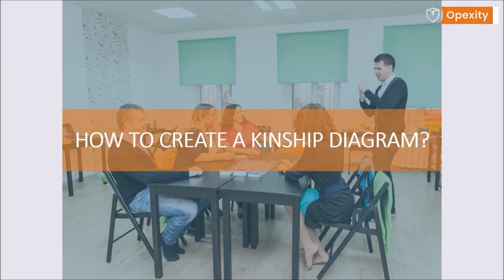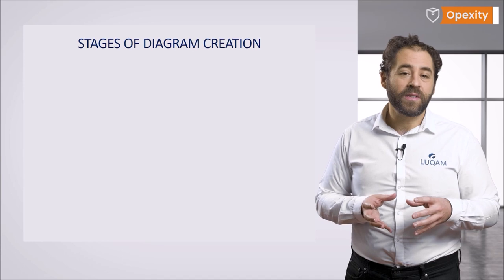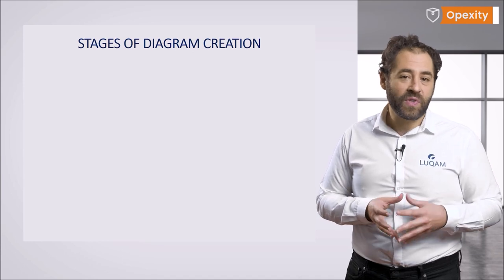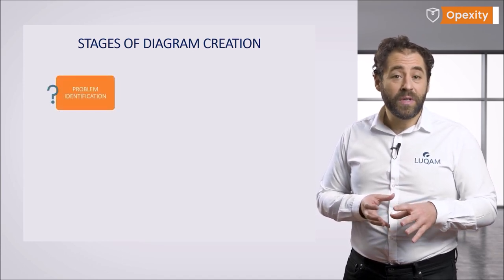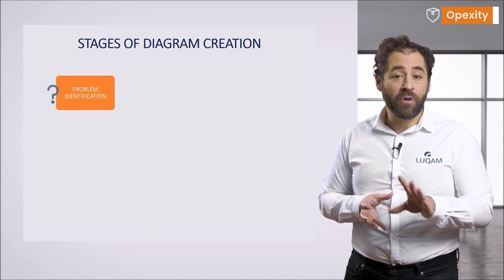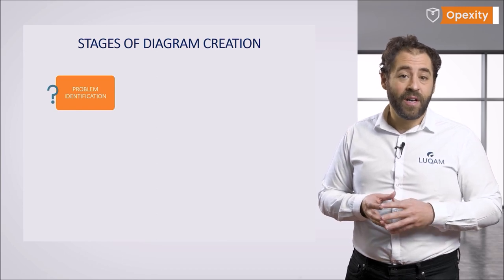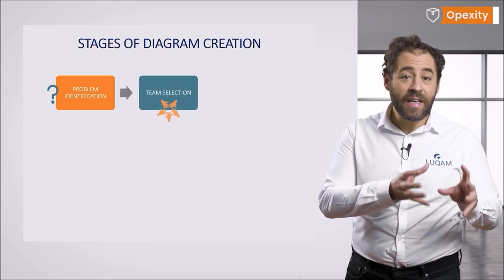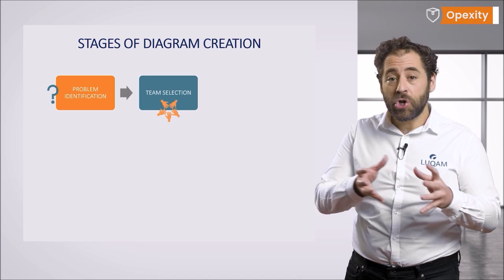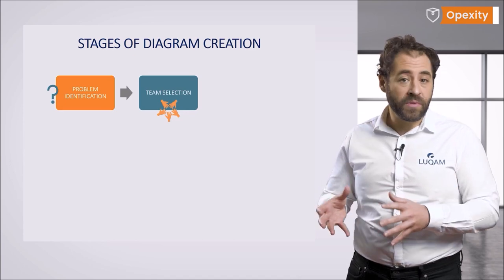How do you create a kinship diagram? It's easier than you think. Creating the diagram consists of seven stages. In the first stage, we define the problem in general. In the second stage, we select a team in charge of problem solving — ideally consisting of four to eight people.